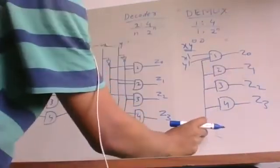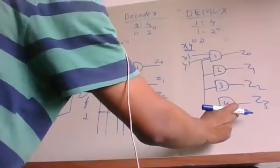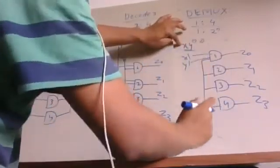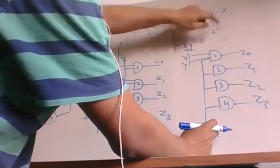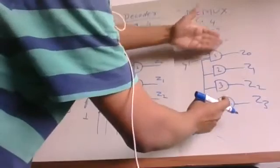One data can be transferred to any of the four outputs depending on the control signal XY. This is a 1-to-4 demultiplexer, where one data can be routed to any of the four outputs.